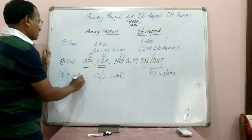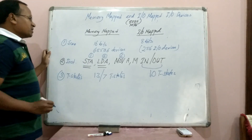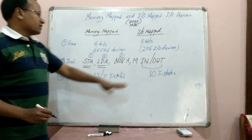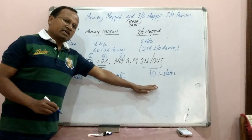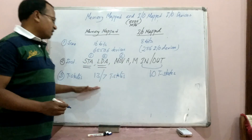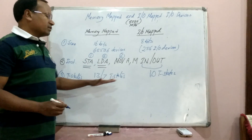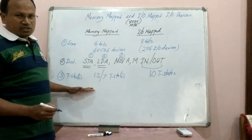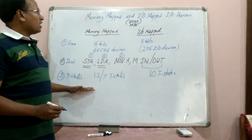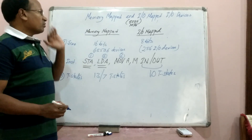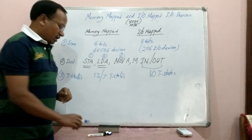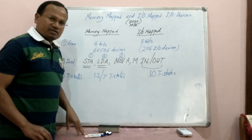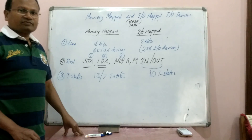These are 3 basic differences. Regarding machine cycles: in IO-mapped IO there are always 3 machine cycles, whereas in memory-mapped IO either 2 or 4 machine cycles are required. Thank you.